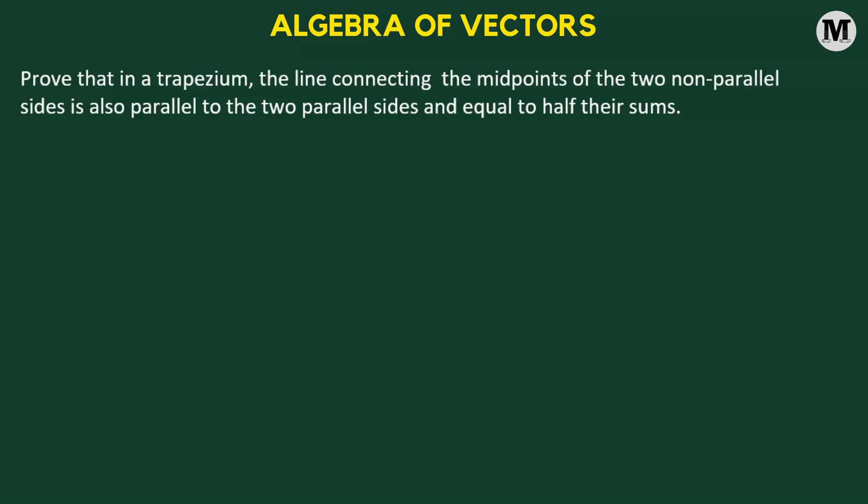We need to prove that in a trapezium, the line connecting the midpoints of the two non-parallel sides is also parallel to the two parallel sides and equal to half their sum. Let us begin — first we'll try to understand the problem graphically.